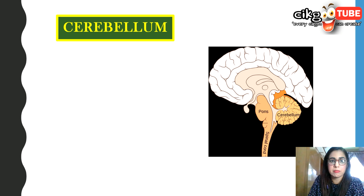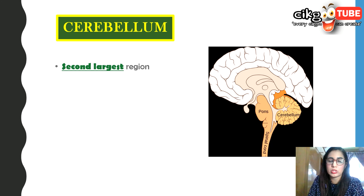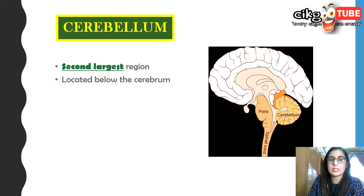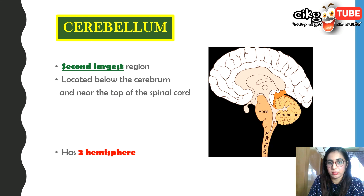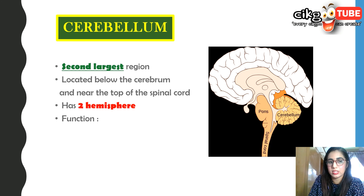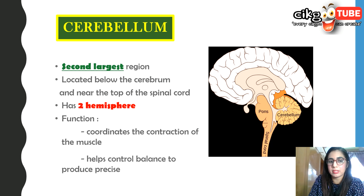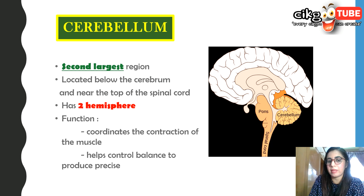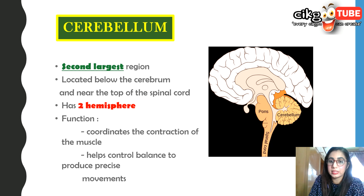The cerebellum is the second largest region of the brain, located below the cerebrum and near the top of the spinal cord. It has two hemispheres and functions to coordinate the contraction of muscles and help control balance to produce precise movements. So balance and precise movement are controlled by the cerebellum.